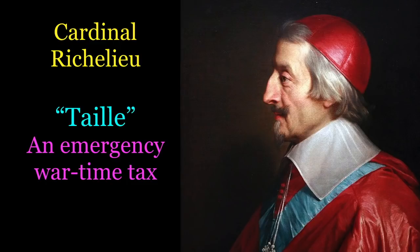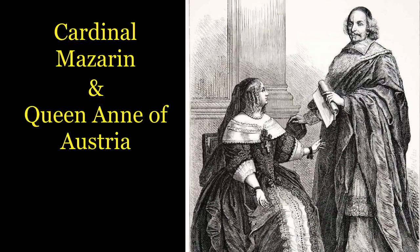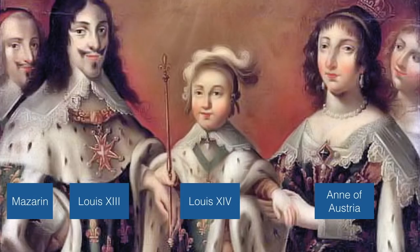Richelieu died during the Thirty Years' War and was replaced by another cardinal — Cardinal Mazarin. Mazarin was a bit of a dandy. He lived lavishly, a quality that did not ingratiate himself to anyone as he raised taxes and sent French troops off to war. He also was not French — he was Italian — so the French didn't feel that he had France's interests at heart. Plus, he most likely was sleeping with the Queen, Anne of Austria. Where was King Louis XIII during all this? He was getting sick and dying. King Louis XIII died at the young age of 41 in 1643. His son, Louis XIV, was only four years old when Louis XIII died. Since Louis XIV was so young, barely able to write his own name, Mazarin was in charge of France.